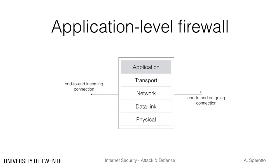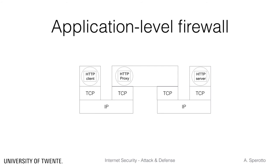An application-level firewall is also known as an application proxy. The proxy consists of two parts: the proxy server, which communicates with the real client, and the proxy client, which communicates with the real server. To achieve this, proxies are clearly stateful. The same application firewall can act as a proxy for several services, which introduces very fine filter granularity. However, this comes at the expense of performance, since transport and application layer states need to be maintained. Also, proxies often run in user space. This type of firewall might also constitute a security risk in itself, since it might be vulnerable to denial of service attacks.